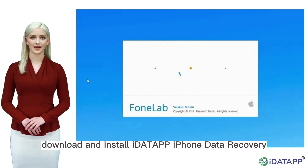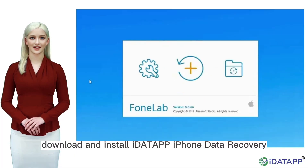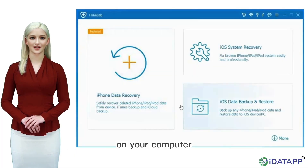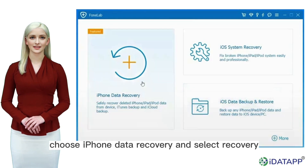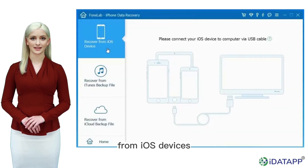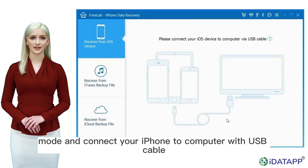Step 1. Download and install iData by Phone Data Recovery on your computer, choose iPhone Data Recovery, and select Recovery from iOS devices, choose the first mode, and connect your iPhone to computer with USB cable.